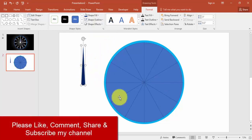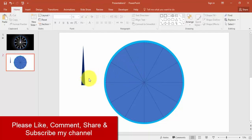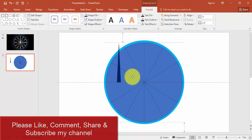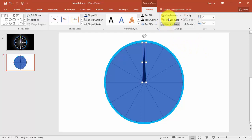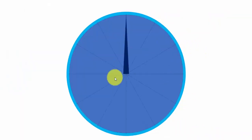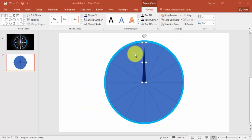I'm going to give some different color to this — later on we'll play with the colors. I'm just going to bring it to the center. This is how the needle looks. Now I'm going to give an animation effect so the needle moves clockwise.